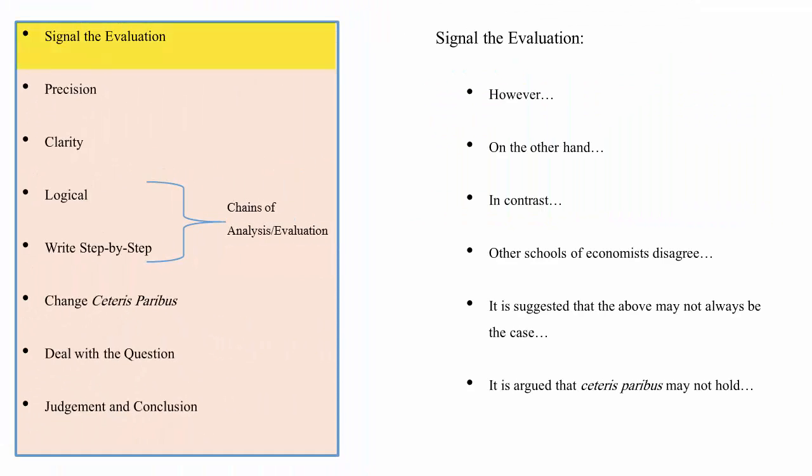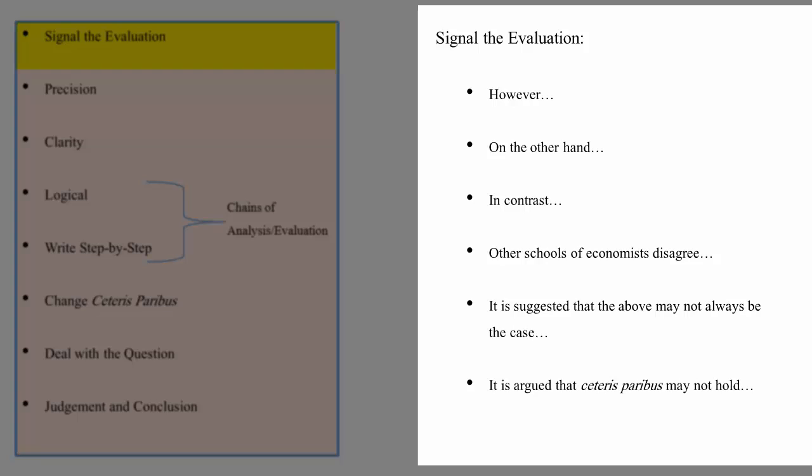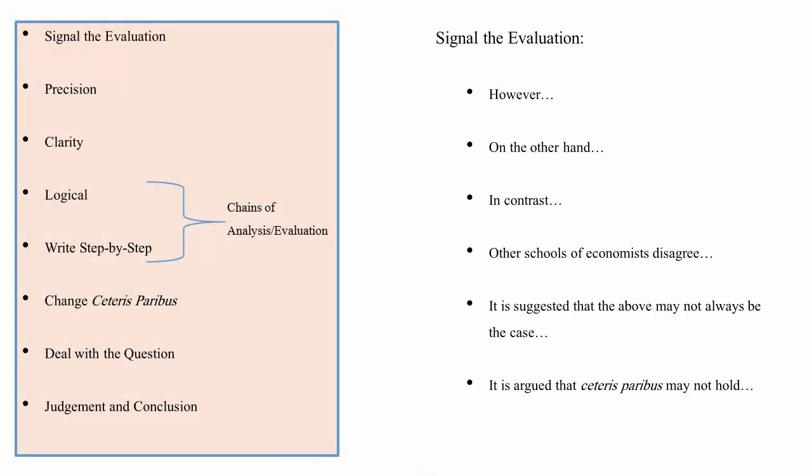In terms of signaling that you're about to undertake evaluation, step number one would be to start a new paragraph. It's much easier for an examiner or your teacher to read an essay if you've got the analysis of a point in one paragraph and then the counter argument, the evaluation to that, in another paragraph separated by lines. In addition, you should begin evaluation with phrases like however, on the other hand, in contrast, or any of those that you can see on the screen. This just consolidates for the reader that you're going to take the other side of the argument.